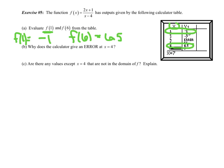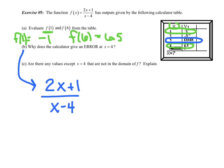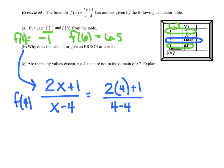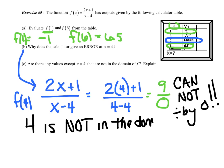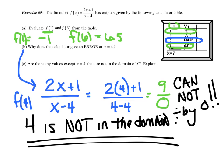Part b: why does the calculator give an error at x = 4? Let's find f(4): that's (2 times 4 plus 1) all over (4 minus 4), which is 9 over 0. You cannot divide by 0 — grab your calculator and try dividing 9 by 0 and it gives a nasty message. So 4 is not in the domain — that's why it gives an error.